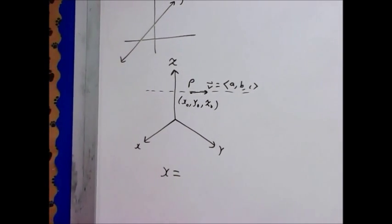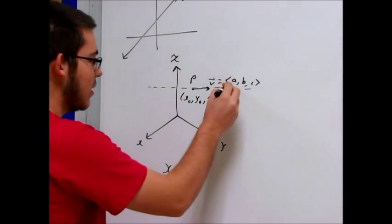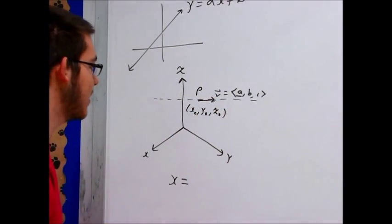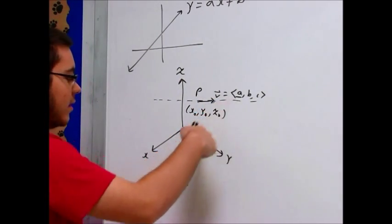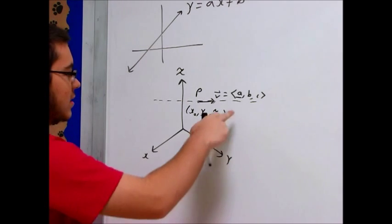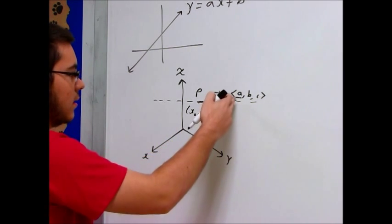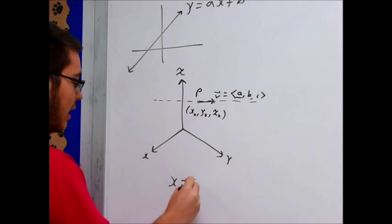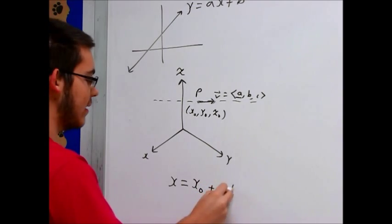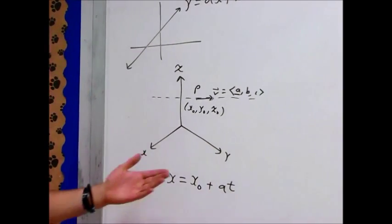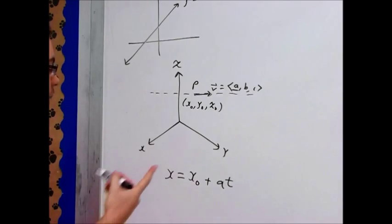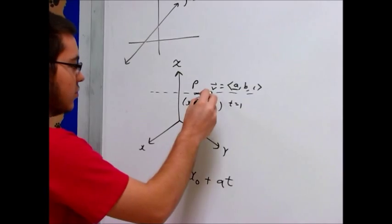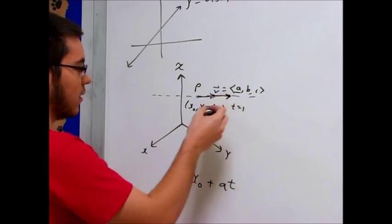And so we're going to describe it in terms of t. For every, let's assume it's going at a unit speed, for every one t that passes a is how much it changes in the x direction. So it's going to start at x0 plus at. And so at the time t equals 1, the point will be right here. And t equals 2, there will be another one of those, and so on.